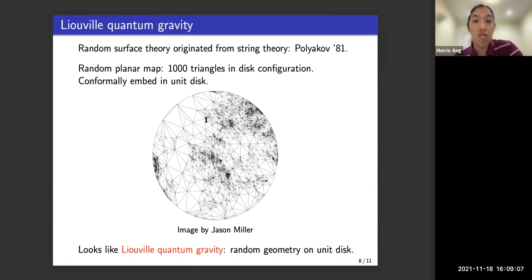This random planar map induces a random geometry on this unit disk as follows. So let's say I give each triangle an area of 1. So here, where the geometry is very sparse, you have a very small area. And here, where the geometry is very dense, you have a large area. Here, if you send the number of triangles to infinity, then in the limit, what you get here is going to be something called Liouville quantum gravity. That's a random geometry on the unit disk.